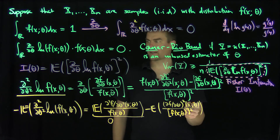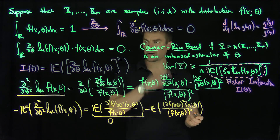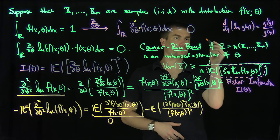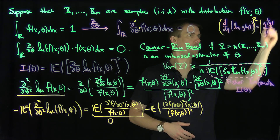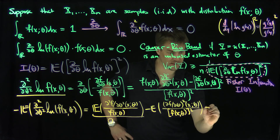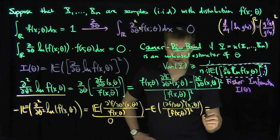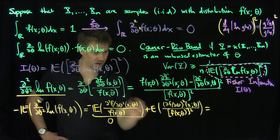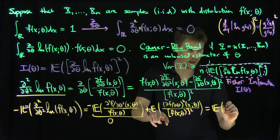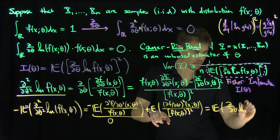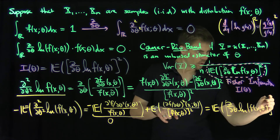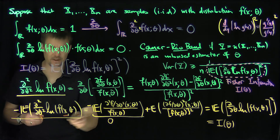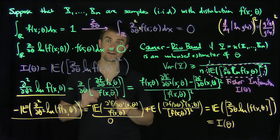When I handle the remaining term with the sign change from the negative out front, this becomes exactly the expected value of the square of the logarithmic derivative of f of x and theta — which is exactly the Fisher information by definition. So another representation of the Fisher information is negative the expected value of the second theta derivative of the log of f of x and theta. Thank you very much.